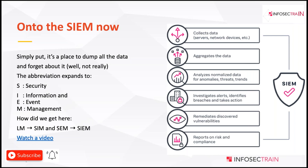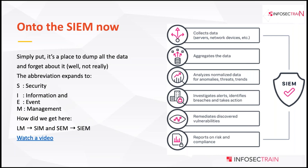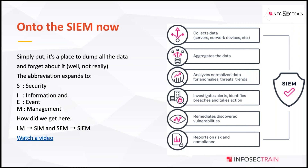SIEM essentially works at none of these layers and works at all of these layers simultaneously. It works on none because it doesn't do anything by itself — it's not an active measure. It works on all because it can listen to and collect data from all those layers. Think of SIEM as the pit in the kingdom: it remains idle unless data is sent towards it, but whoever falls into it is caught. SIEM remains idle unless data flows to it — that is why it's a passive measure.